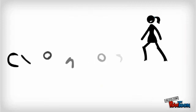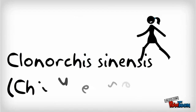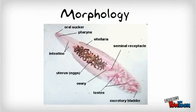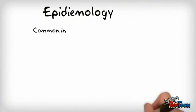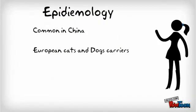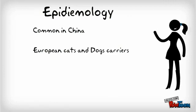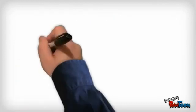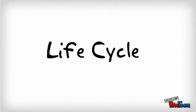Next we'll look at Clonorchus sinensis. The adult can be seen stained with carmine or hematoxylin. The liver fluke is common in China, and European cats and dogs are seen to be carriers.